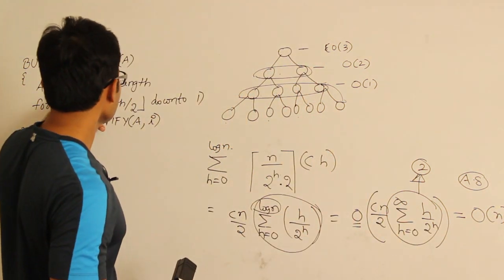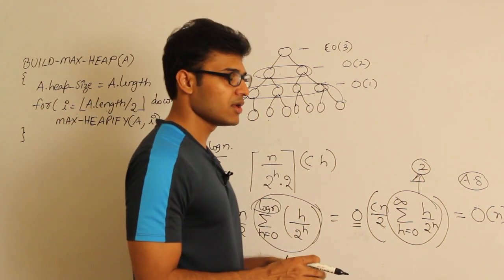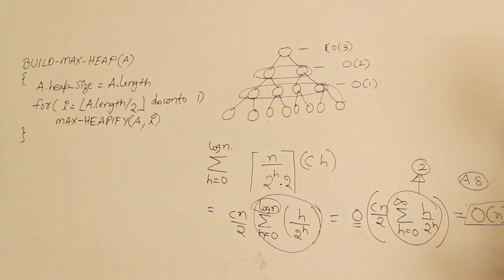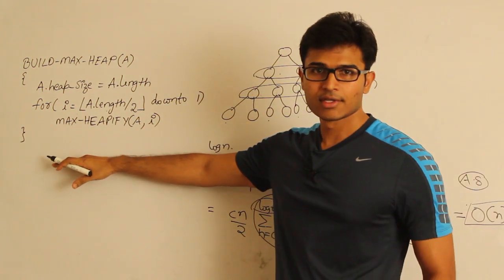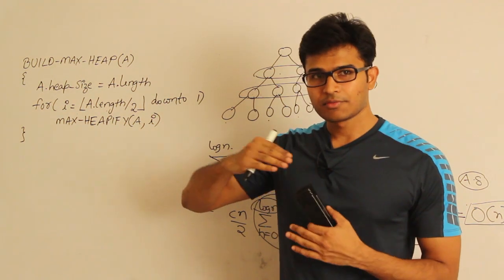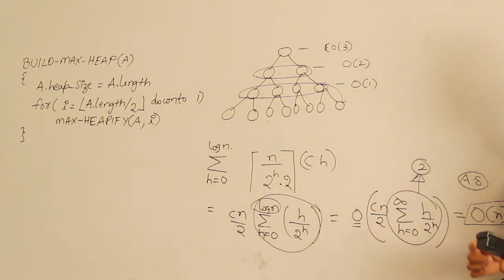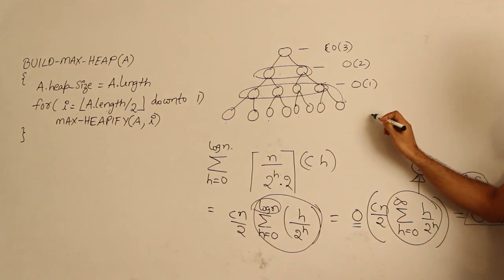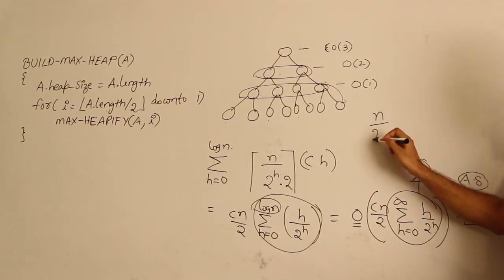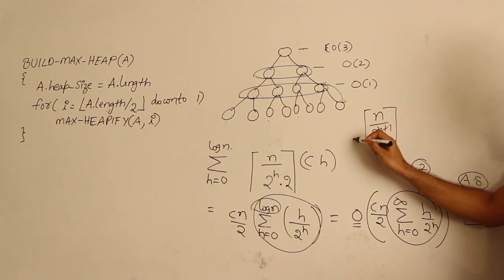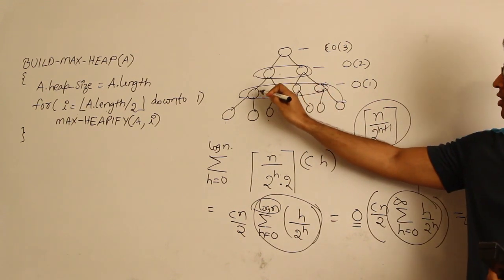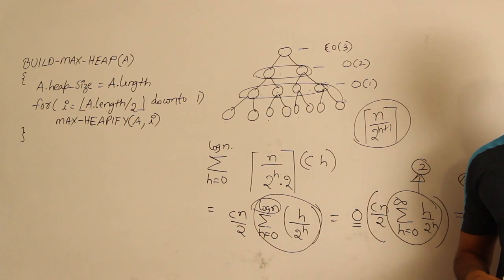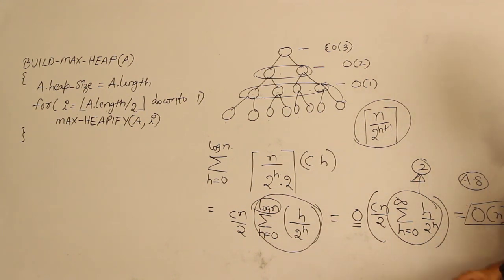So the time taken by build max heap is O(n), not O(n log n). The proof relies on two facts: first, the number of nodes at height h in a complete binary tree is at most ⌈n / 2^(h+1)⌉; second, the work done by max heapify at any node is O(h) — proportional to its height, not a fixed log n.